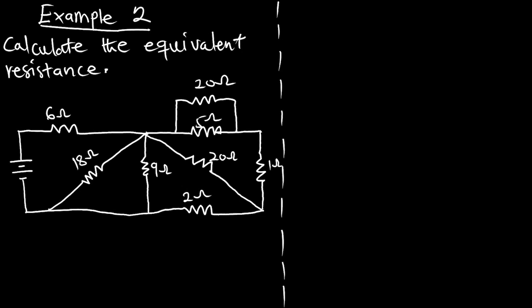Welcome to Einstein's Mechanics. In this episode we are going to look at example two for solving series-parallel circuits. The example says: calculate the equivalent resistance, and we have our circuit. There are a lot of resistors, some connected in series and some in parallel. We are going to reduce this circuit into an equivalent resistance by solving it systematically, considering those in series and those in parallel.